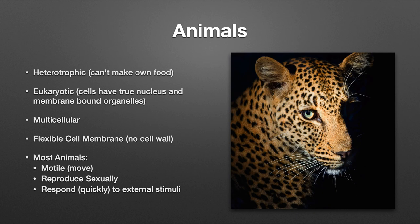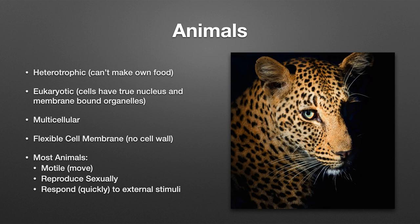Let's break that down. Heterotrophs just eat other things — they can't make their own food like plants can with sunlight. Eukaryotic means they have complex cells with membrane-bound organelles like a nucleus, mitochondria, and other things along those lines, so they're more advanced than bacteria or archaea. Multicellular means all animals have more than one cell; single-celled animal-like things we call protists. Animals also have flexible cell membranes — we don't have a cell wall like fungi and plants do.